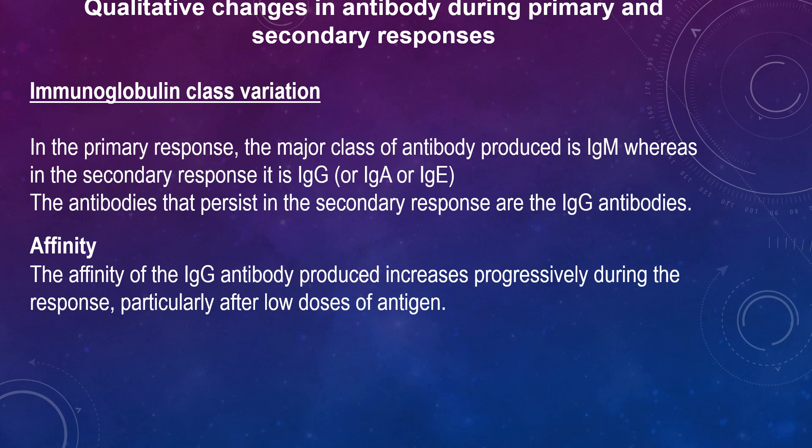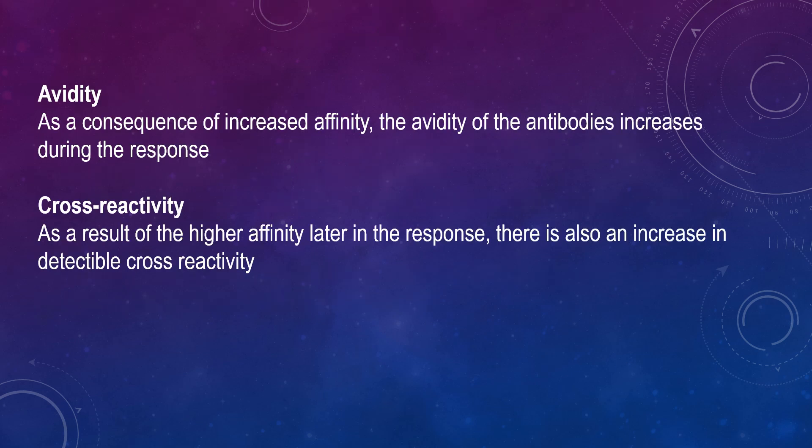The antibodies that persist in the secondary response are IgG antibodies. The affinity of the IgG antibody produced increases progressively during the response, particularly after low doses of antigen — this is referred to as affinity maturation. Affinity maturation is most pronounced after secondary challenge with antigen. One explanation for affinity maturation is clonal selection. A second explanation is that after a class switch has occurred, somatic mutation fine-tunes the antibodies to be of higher affinity. As a consequence of increased affinity, the avidity of the antibodies also increases during the response, and there is a corresponding increase in detectable cross-reactivity.